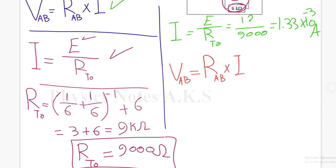RAB, I have it, 6 kilo ohm, which is 6,000, multiplied by the current that I got, 1.33 × 10^-3.